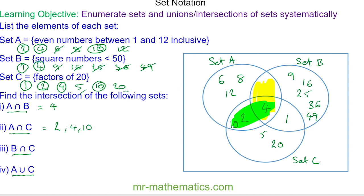B intersecting with C is this region here. So these elements are 1 and 4. And finally, A in union with C, we have these two sets here.